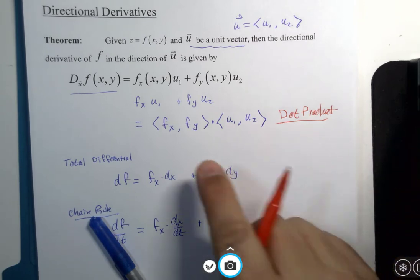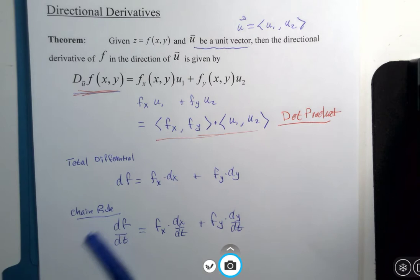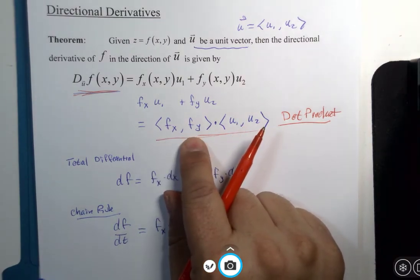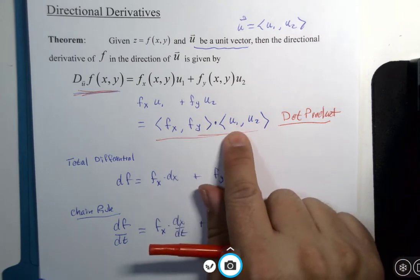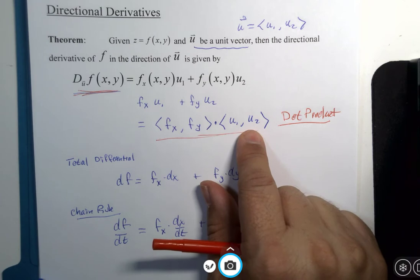And this is what I would probably call our actual shortcut. We have a vector made up of the partial derivatives of our function. And we have a vector, in this case, that is our unit vector, the direction we're going for directional derivative.